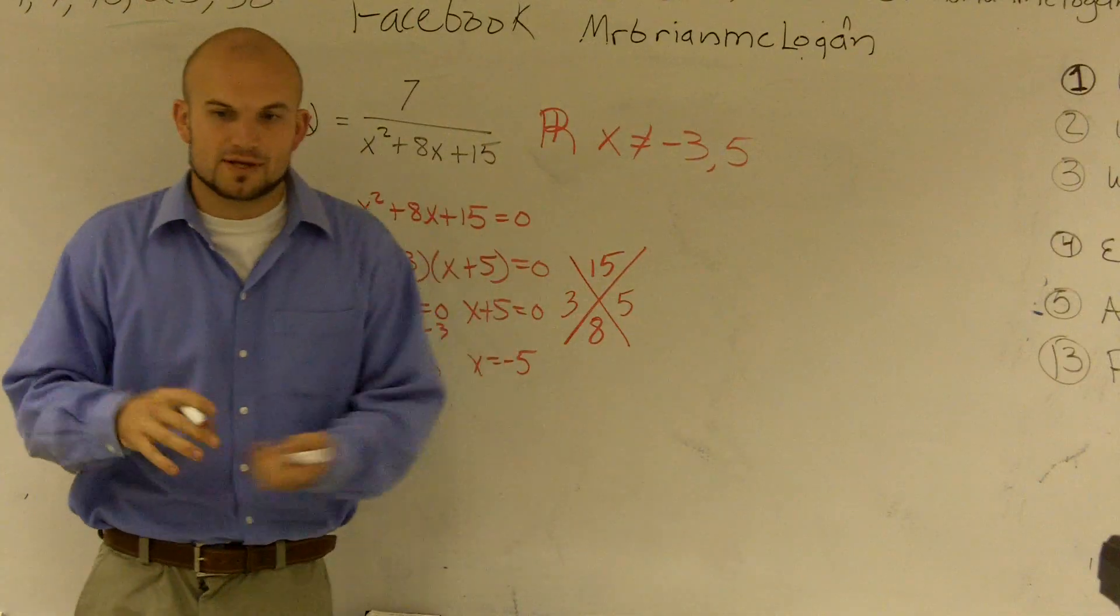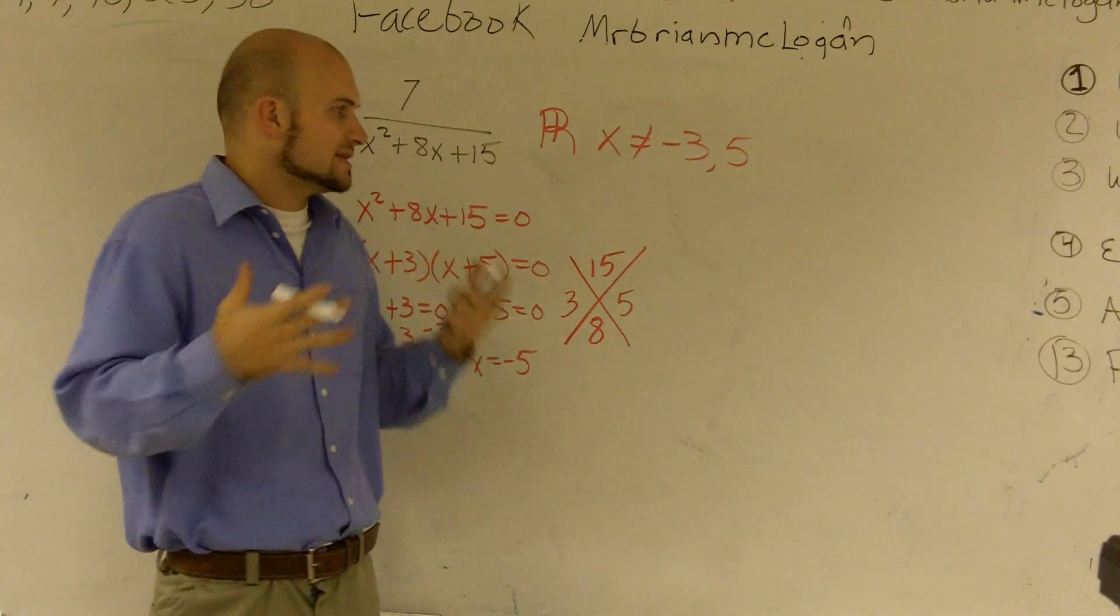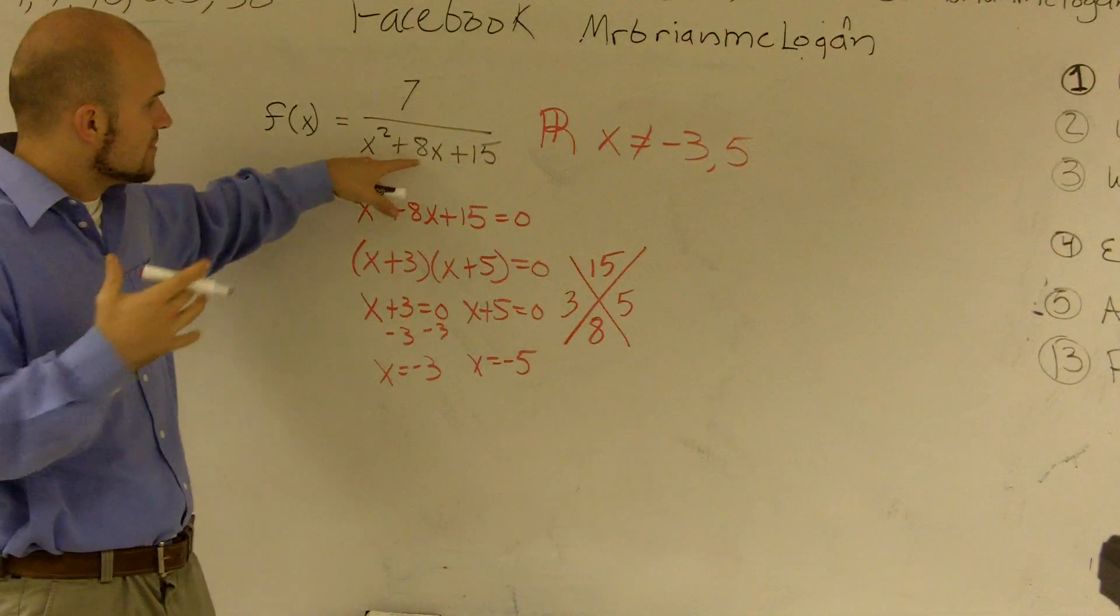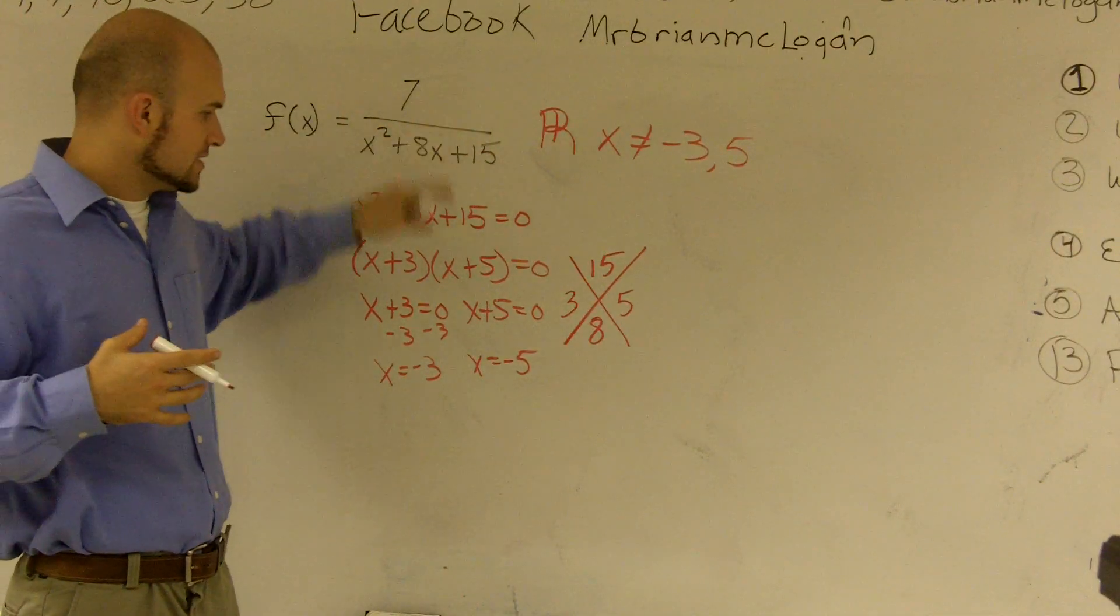you want to see what numbers can't we use. And the numbers we can't use are the numbers that are going to make our denominator 0.